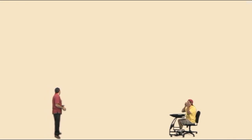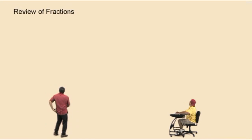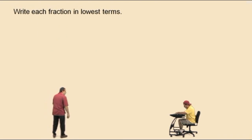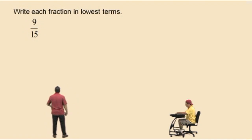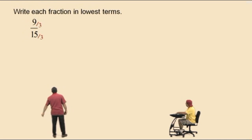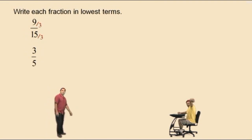Today we're going to do a review of fractions — multiplication, division, and reducing fractions. Write each fraction in lowest terms, which means always reduce your fractions. 9 fifteenths — Charlie, what's a common factor of 9 and 15? 3. That means what number divides evenly into 9 and 15? That's 3. And 9 divided by 3 is 3. 15 divided by 3 is 5. Very nice. Don't forget to circle or box your answer.